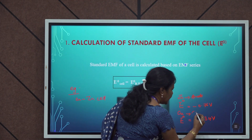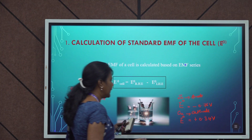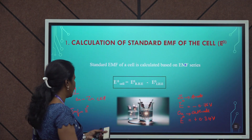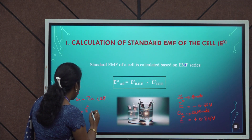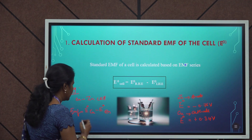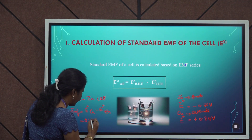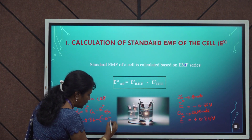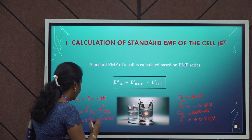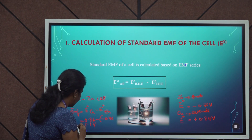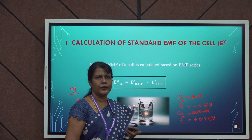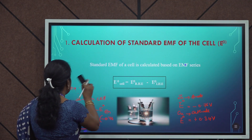Copper has a positive E° value: E° for copper is +0.34 V, so it will act as a cathode. The EMF of this cell is E°right − E°left, which is 0.34 − (−0.76) = 0.34 + 0.76 = 1.1 volt. So the EMF of the cell is equal to 1.1 V. From this EMF series, we can easily calculate the voltage produced in a cell. This is the first application.